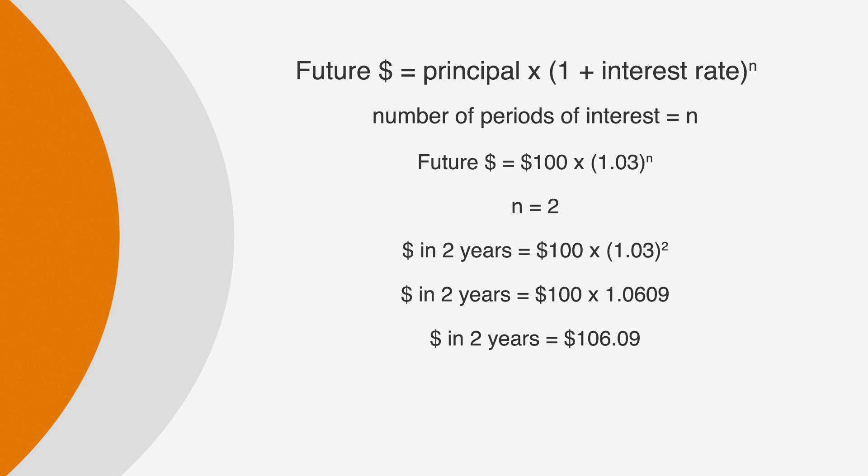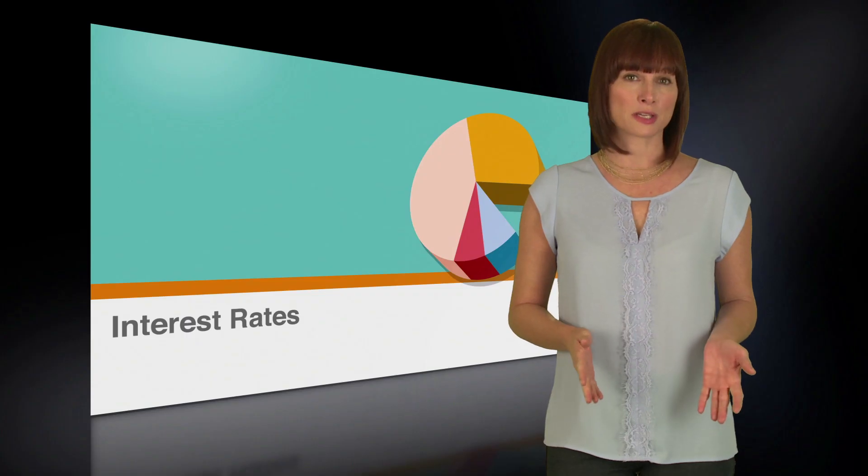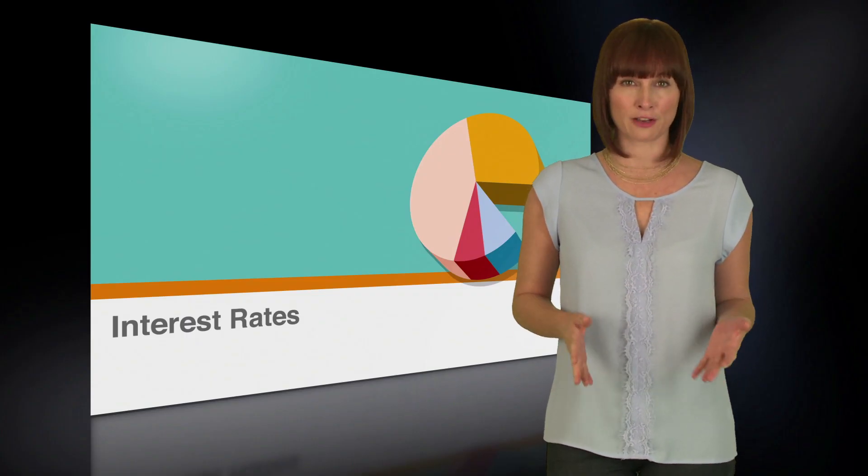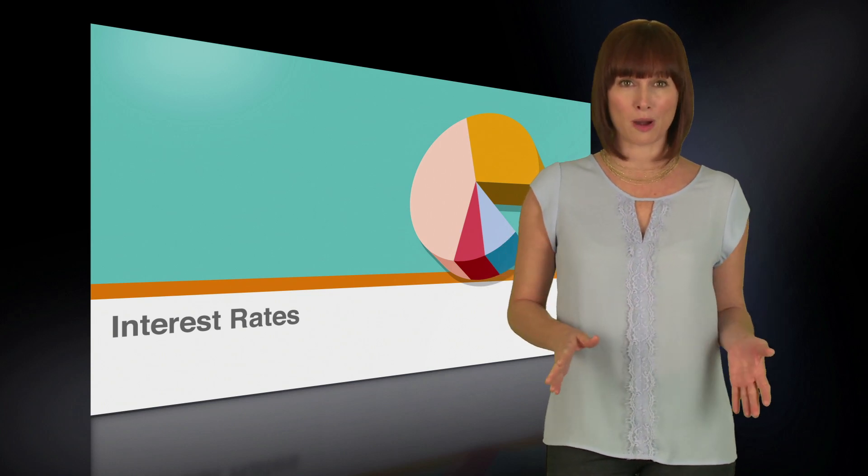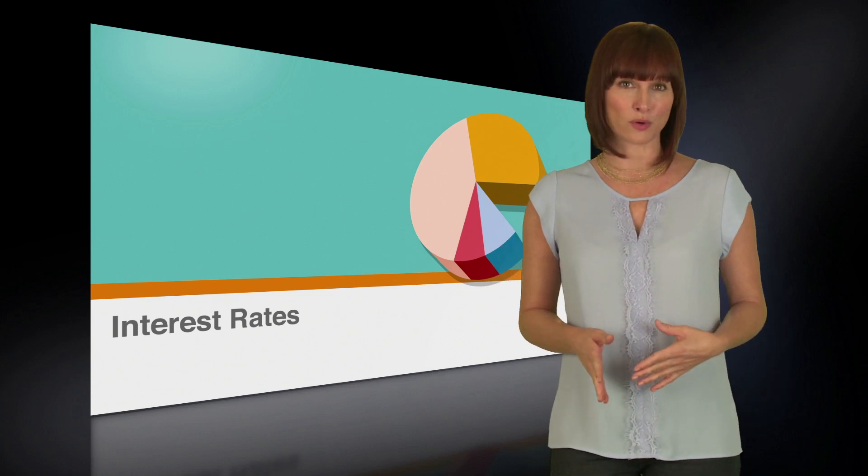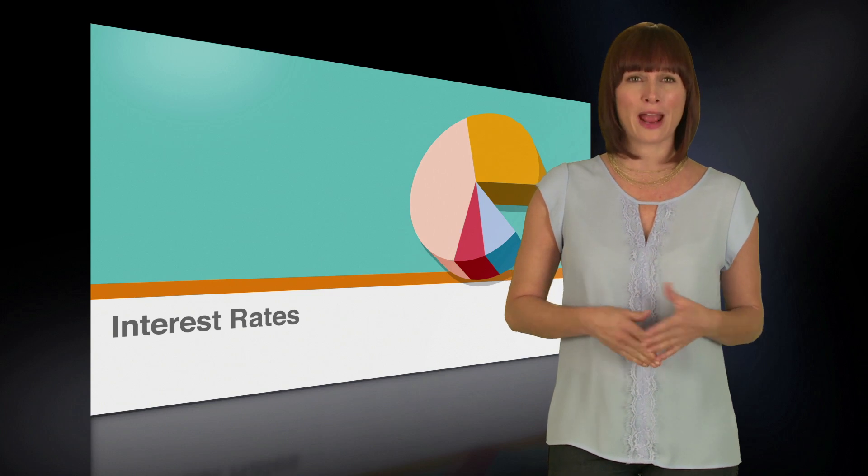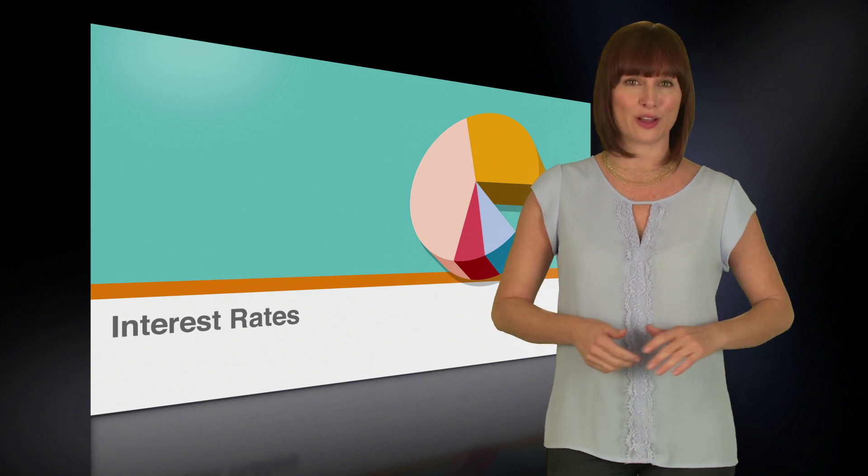If we wanted to know how much money we would have in five years, we would change n to 5. And if we wanted to know how much money we would have in 12 years, we would change n to 12. Not all compound interest in the world can be calculated with this basic formula. Some financial models can get much more complex. But understanding this formula should have you well prepared for any interest problems you might encounter on the SAT.